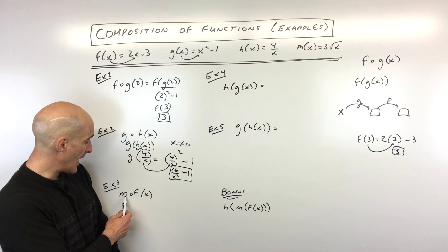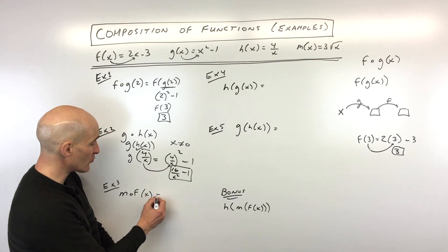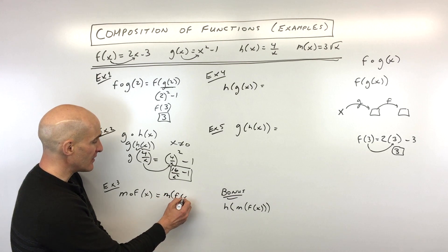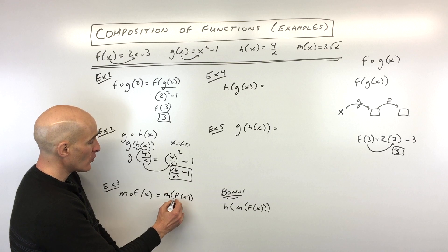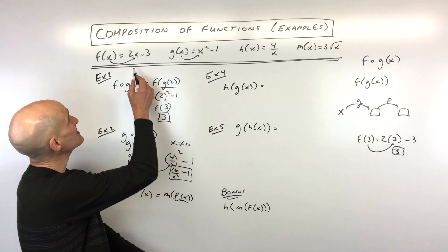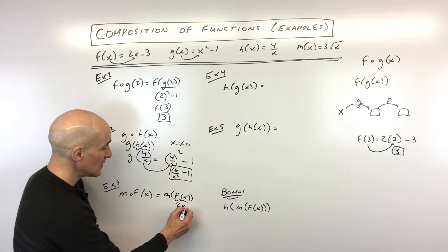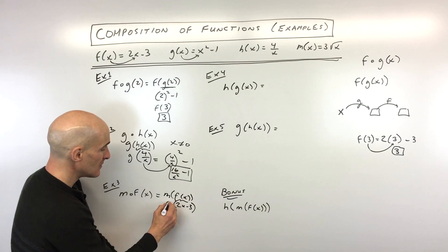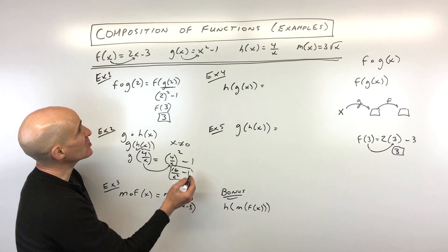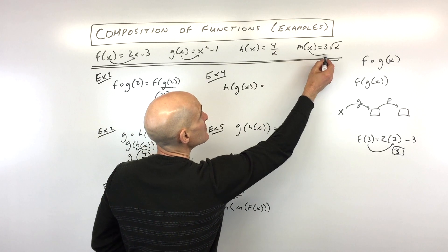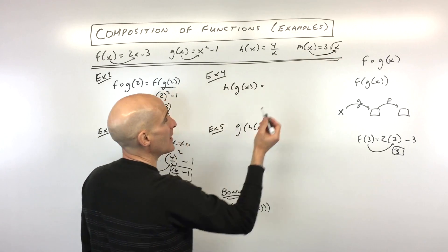Let's go to example number three, we've got m of f of x. Again, I like to rewrite this like this, I think it's a little bit more descriptive. We're going to start on the inside, f of x is 2x minus 3, so let's put that in place of f of x. Now we're going to go to our m function, which is over here, whatever's in parentheses goes in place of x on the right.